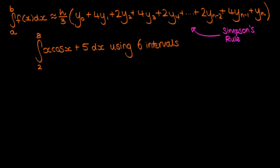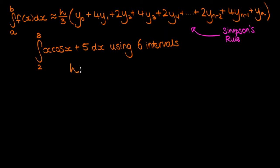Here we have a second integral: the definite integral from 2 to 8 of x·cos(x) + 5 dx. We're going to approximate this using Simpson's rule with 6 intervals. Just like last time, the first thing we do is work out the value of h. Since we're integrating from 2 to 8 with 6 intervals, h equals 8 minus 2 over 6, which equals 1.